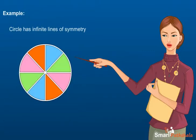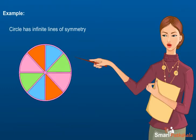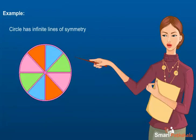It is not necessary that the line of symmetry should be vertical only. It can be in any direction. For example, a circle has infinite lines of symmetry in all directions.